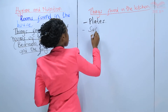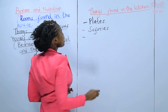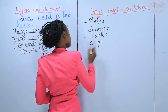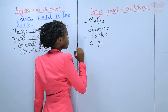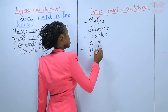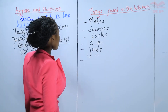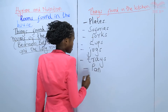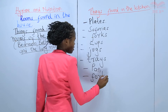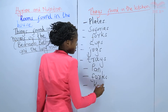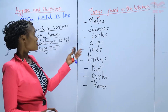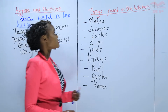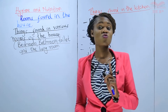We have sufurias. We have forks. We have cups. We have jugs. We have trays. These are some of the things that are found in the kitchen — plates, sufurias, forks, cups, jugs, trays, pans, and knives. All these are utensils, things that you can use to cook and serve food.